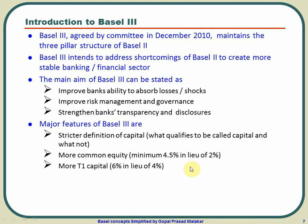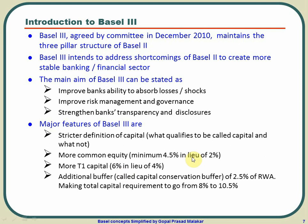It also said that Tier 1 capital, which was a 4% norm in BASEL 2, should be a minimum of 6%. It introduced one more term called the capital conservation buffer of 2.5% of the risk-weighted assets. As a result, while in BASEL 2 you kept 8% of total risk-weighted assets as required capital, that became 10.5% in BASEL 3 because of the additional 2.5%.